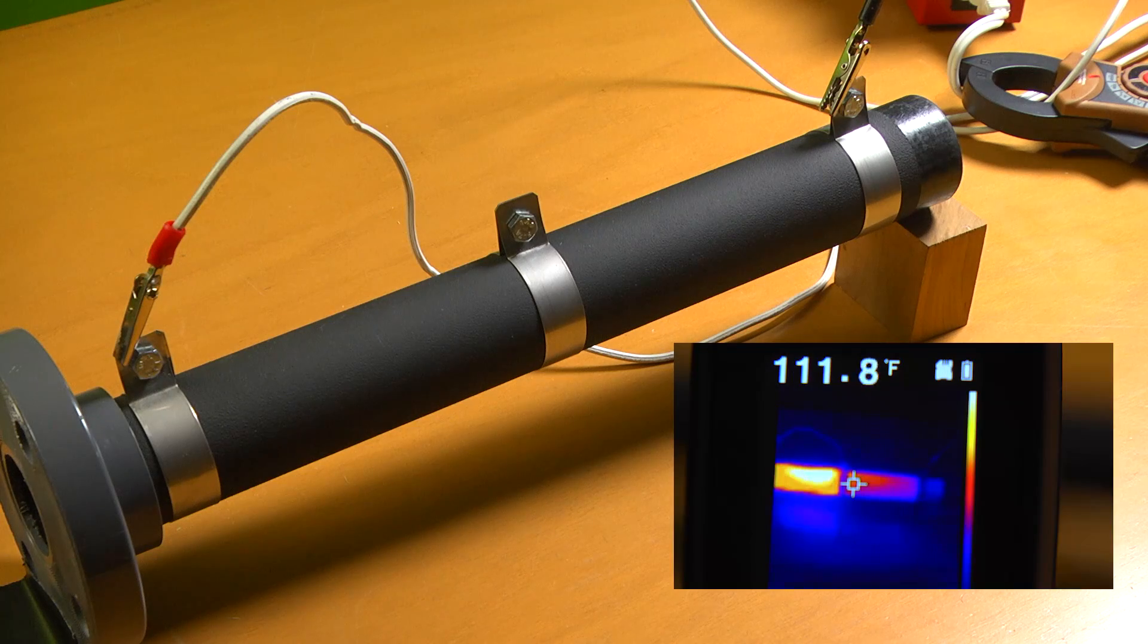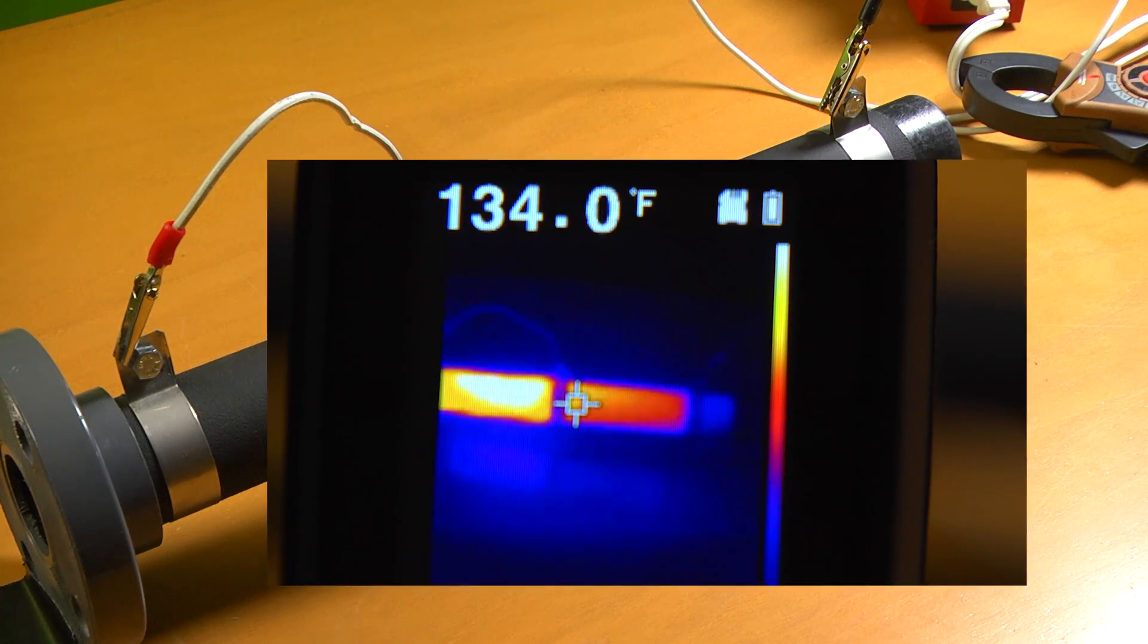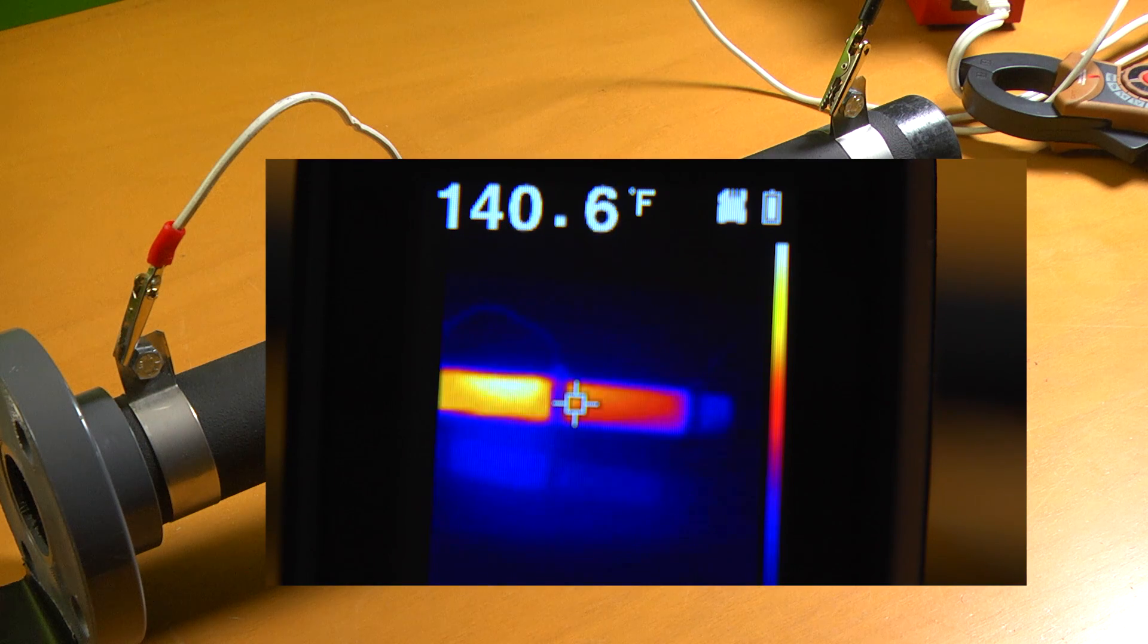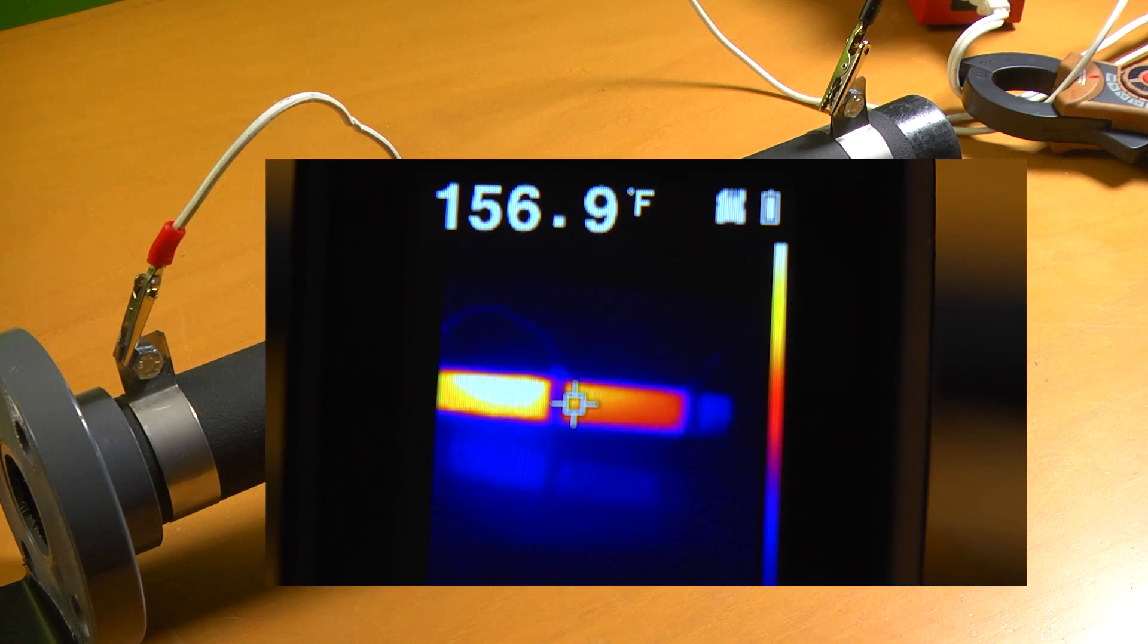Now, watch what happens when the electrical leads are moved to energize the right side of the pipe. This is a simple example of how easy it is to manage the temperature of a Thermal Coat surface, using circuit design, along with controlling the amount of electrical energy applied.